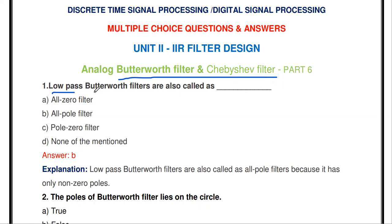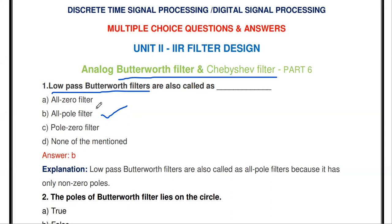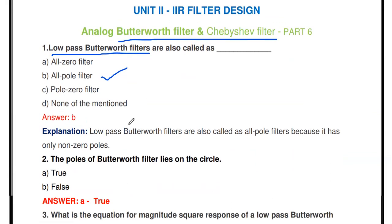The low-pass Butterworth filter is also called as an all-pole filter — not all-zero, not pole-zero. That means this filter has poles only; it doesn't have any zeros. The roots of the denominator polynomial are called poles. So Butterworth filters are all-pole filters.